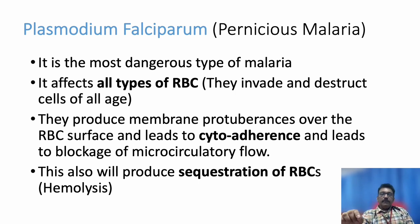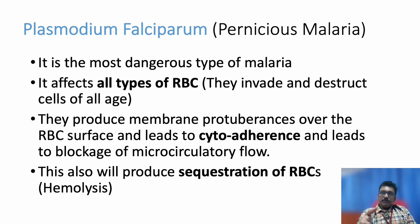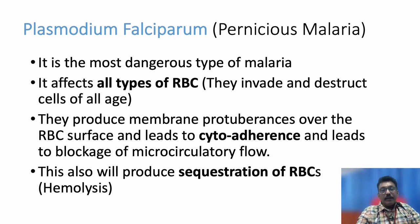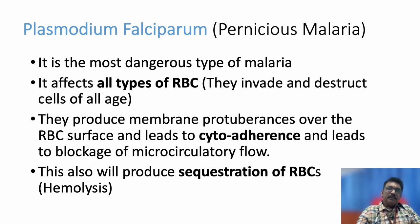The third problem is sequestration, which can lead to hemolysis. Any cytoadherence or thrombus formation in the body will be lysed by the body's own mechanism, so hemolysis is more in falciparum malaria. To summarize, falciparum malaria complications arise from three mechanisms: it affects all age groups of RBCs; cytoadherence blocks microcirculation producing multi-organ dysfunction; and sequestration causes more hemolysis and more anemia.